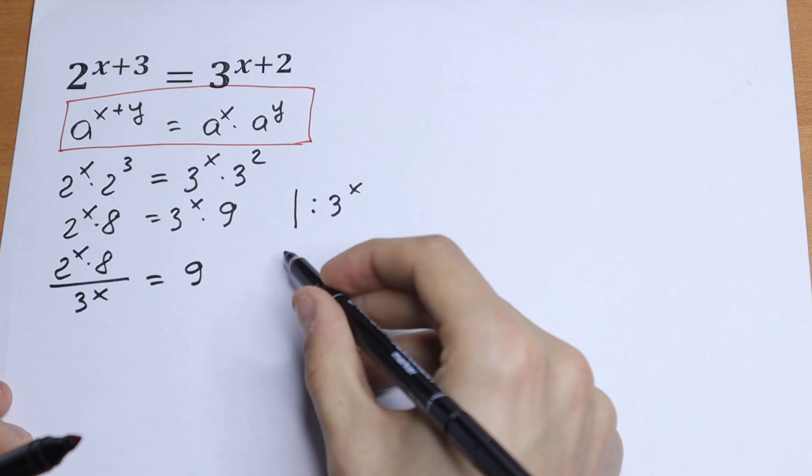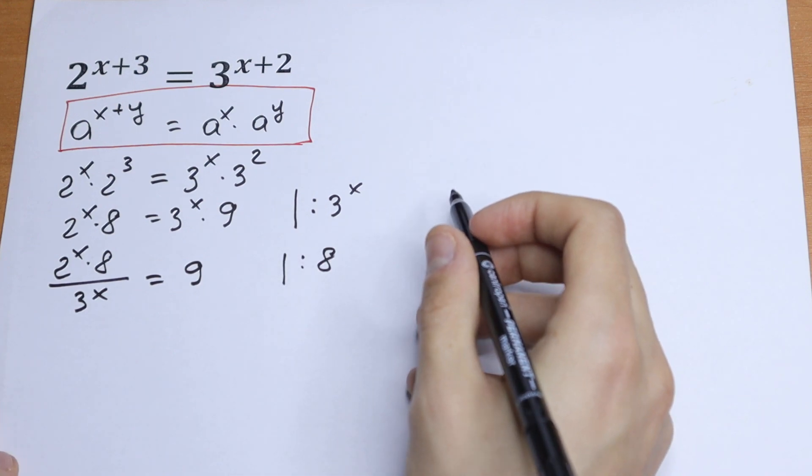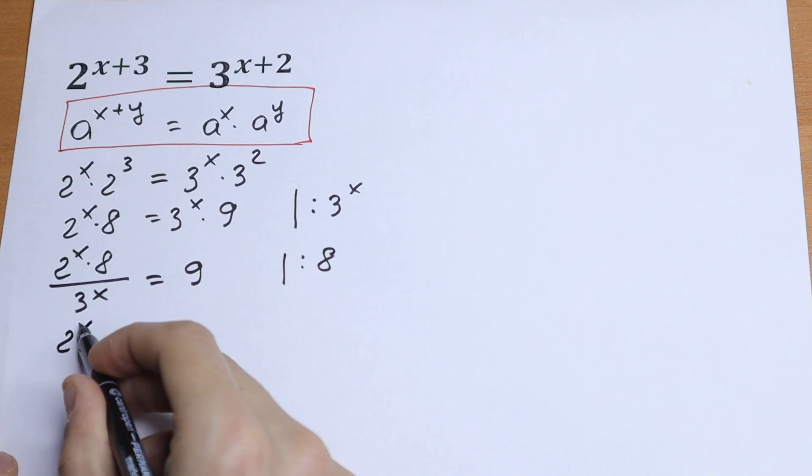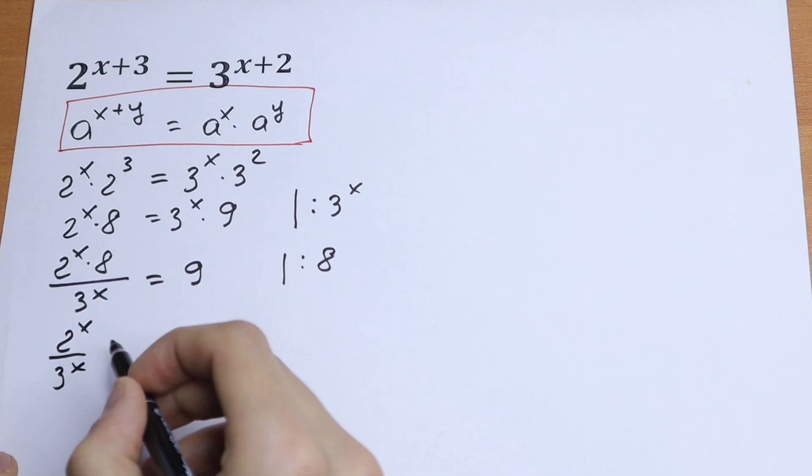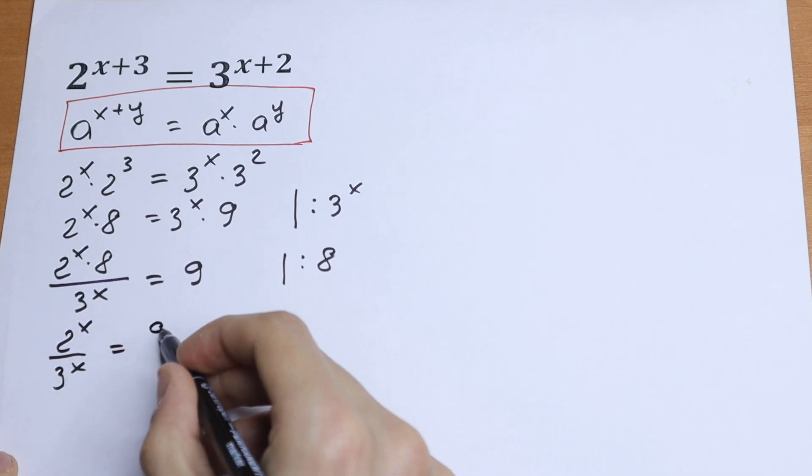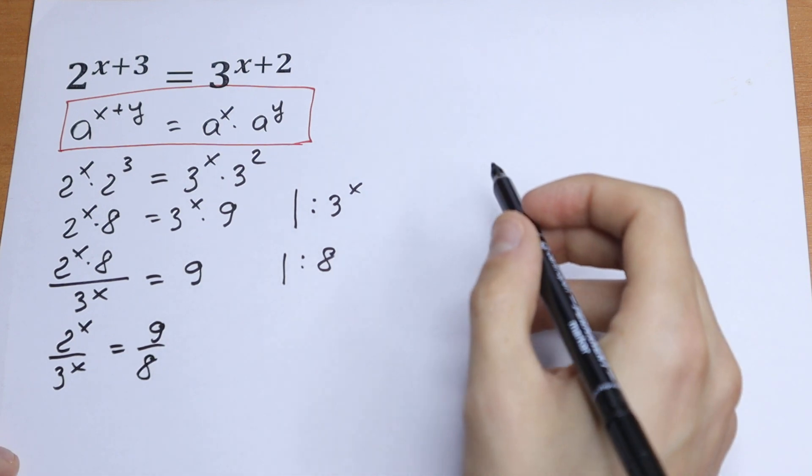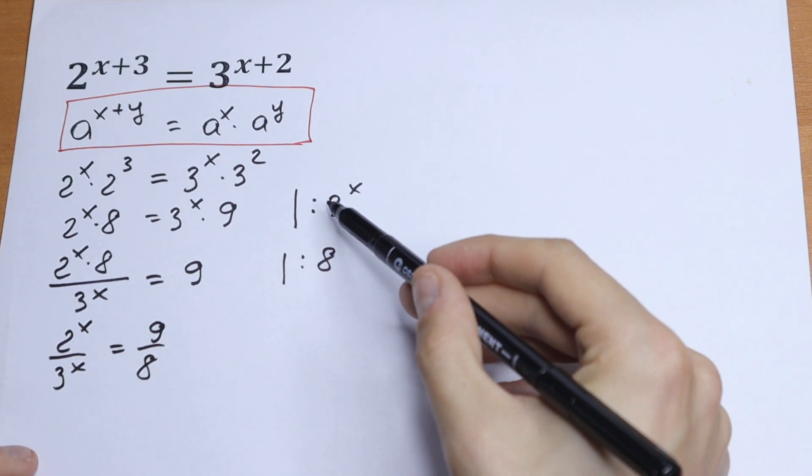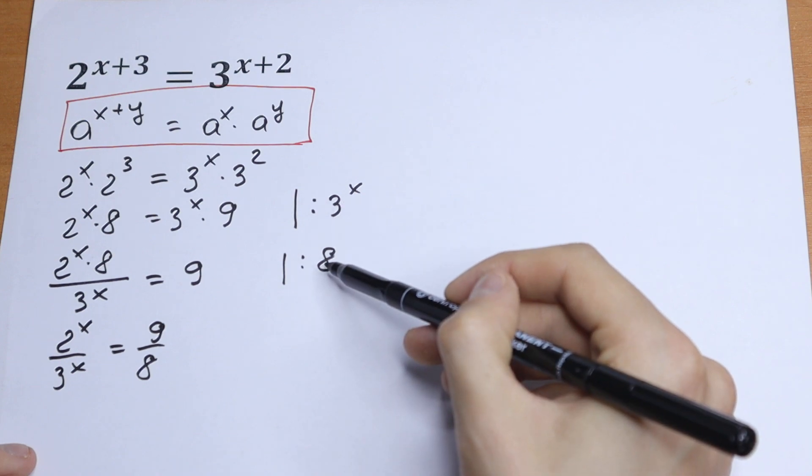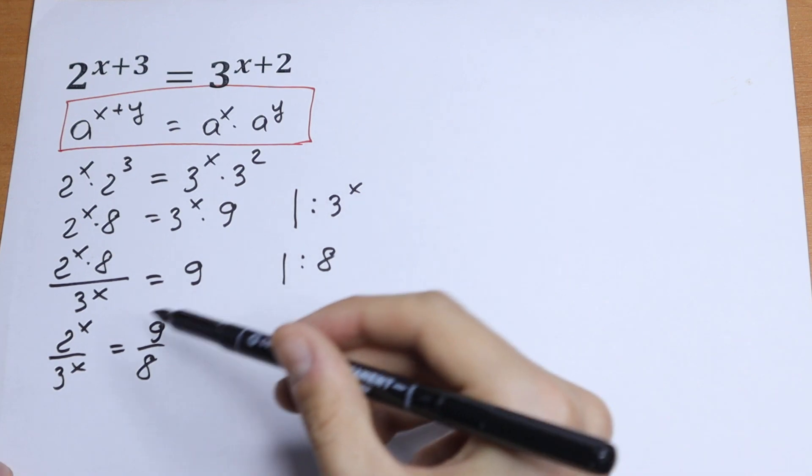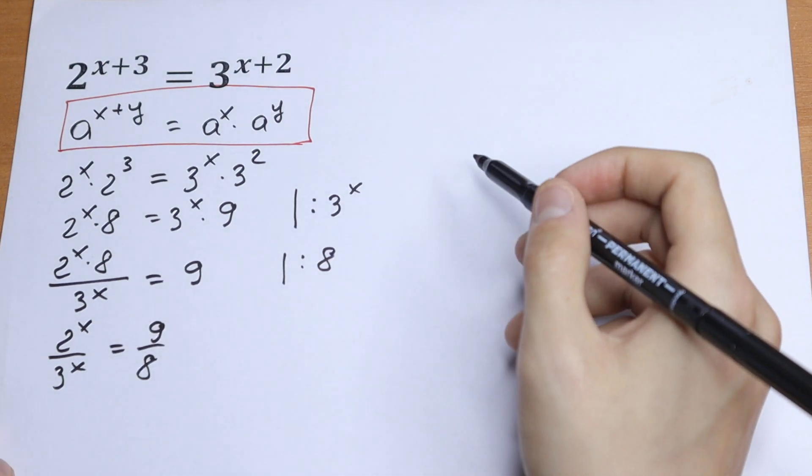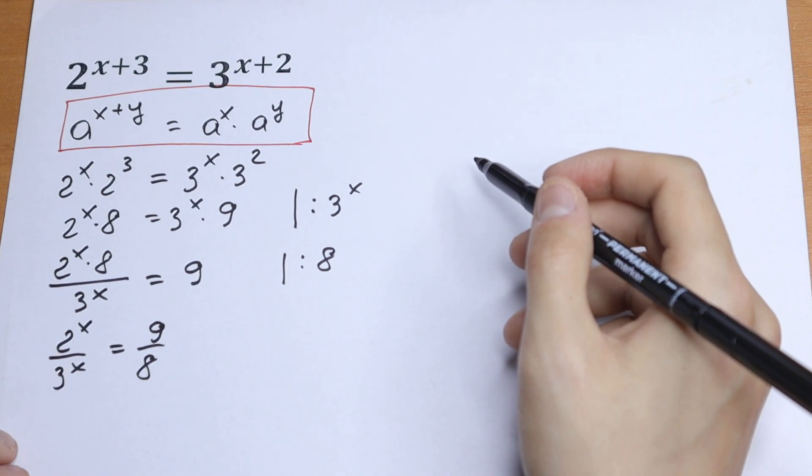And one more divided by 8. We will have 2 to the power x over 3 to the power x equal to 9 over 8. Just 2 steps: first dividing by 3 to the power x, and second dividing by 8.